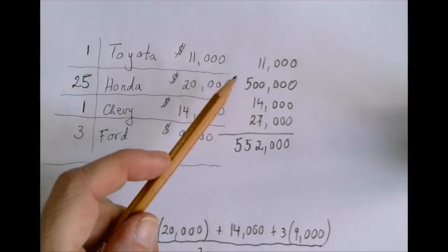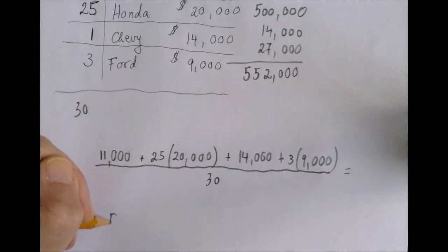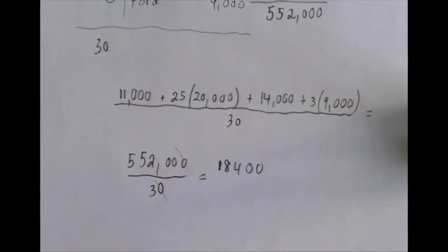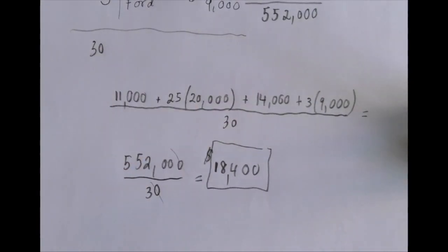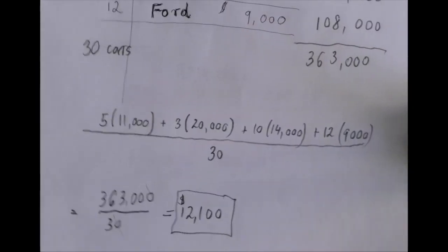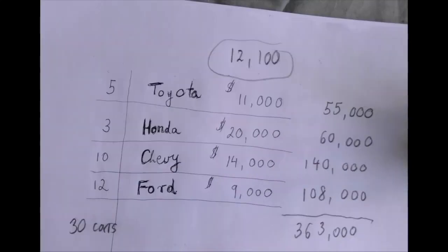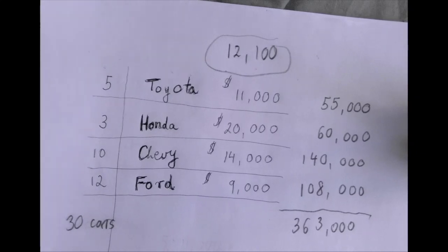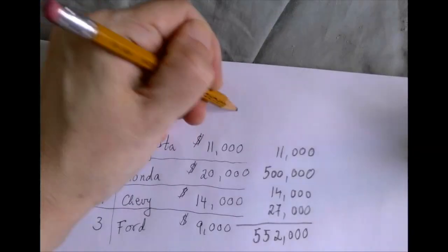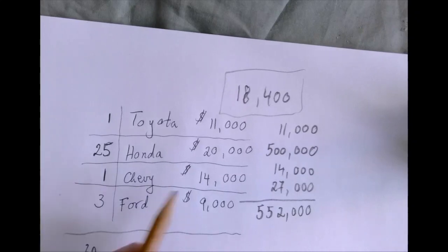Notice how much of the value is being contributed by the car worth $20,000. Our result is 552,000 ÷ 30 = $18,400. Compare that to the previous average of $12,100 — we had the same number of cars, but this time it was heavy on the more expensive side, which pulled the average up significantly.